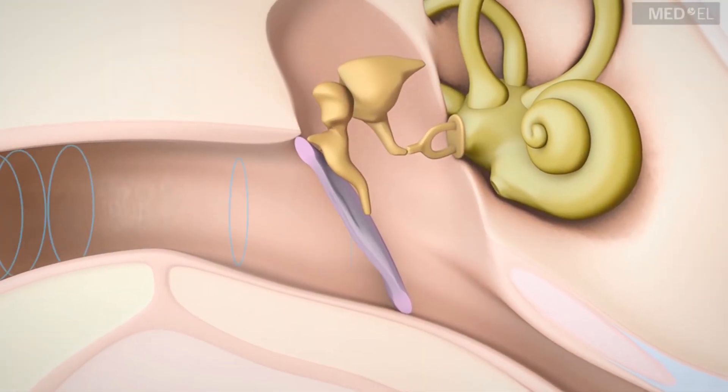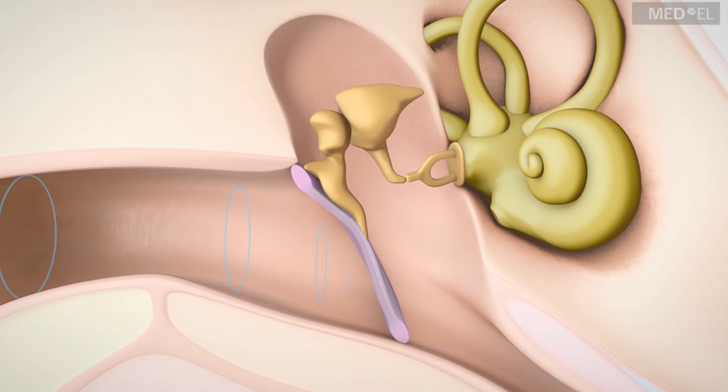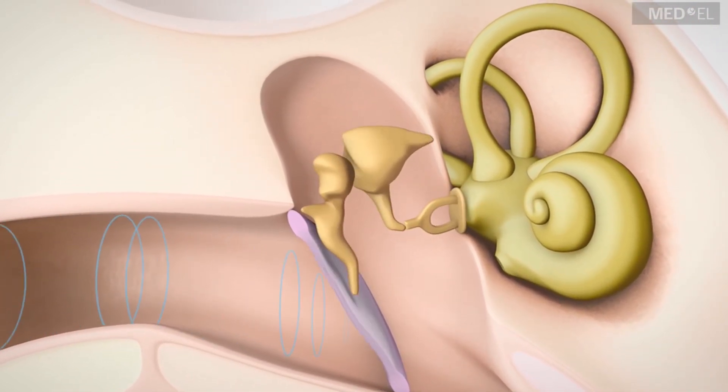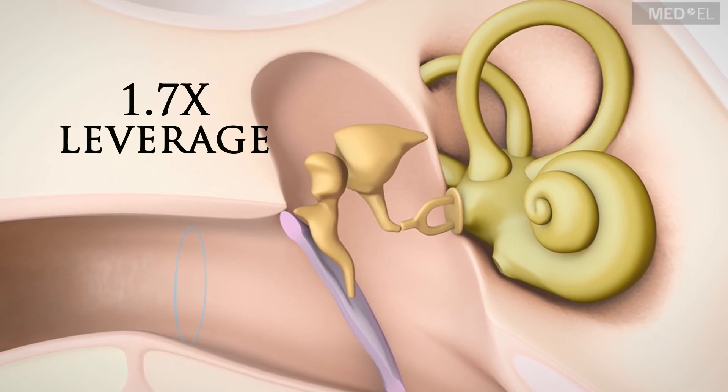These sound waves press against our eardrums and wiggle three tiny bones, called the hammer, anvil, and stirrup, that amplify the signal by a factor of 1.7 times using leverage.